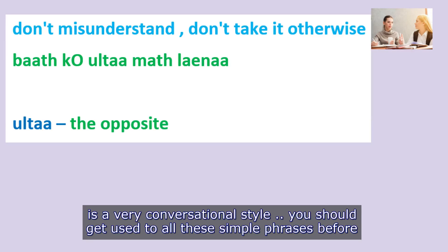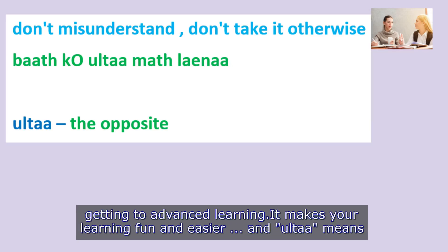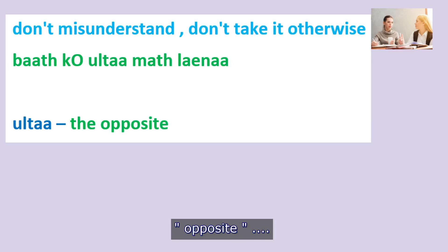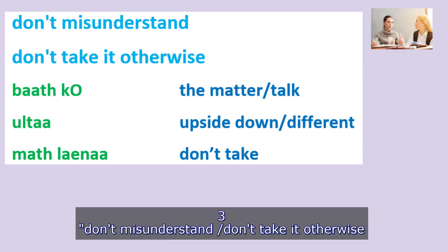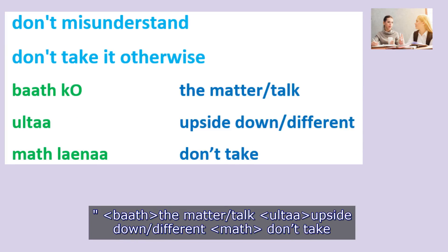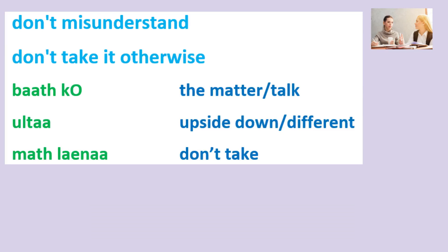You should get used to all these simple phrases before getting to advanced learning. It makes your learning fun and easier. 'Ulta' means opposite. So 'Baat ko' means the matter or talk, 'ulta' means upside down or different, and 'mathlena' means don't take. Don't misunderstand or don't take it otherwise: 'Baat ko ulta mathlena.'